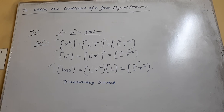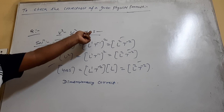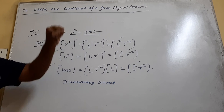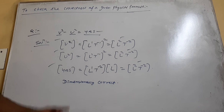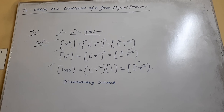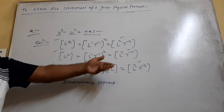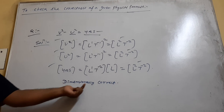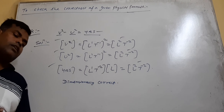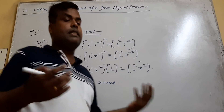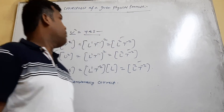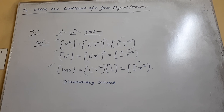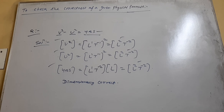But notice — v squared minus u squared is not 4as. The correct formula is v squared minus u squared equals 2as. Here we have taken 4as. Dimensionally, it is found that this formula is correct, but actually it is wrong. That is why we write 'dimensionally correct' — dimensionally correct means there is still a chance for it to be incorrect, because dimensional analysis cannot give any information about numerical values.